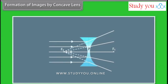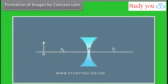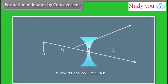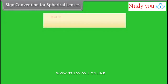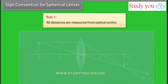Formation of images by concave lens: When the object is at infinity, the image forms at F on the same side — virtual, erect, and diminished to a point. When the object is placed at any distance, the image forms on the same side between the optical center and F — virtual, erect, and diminished.